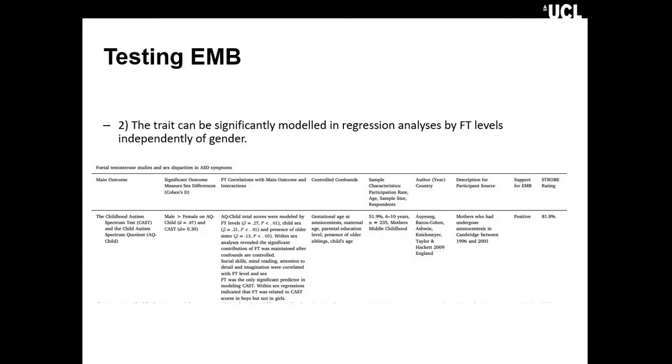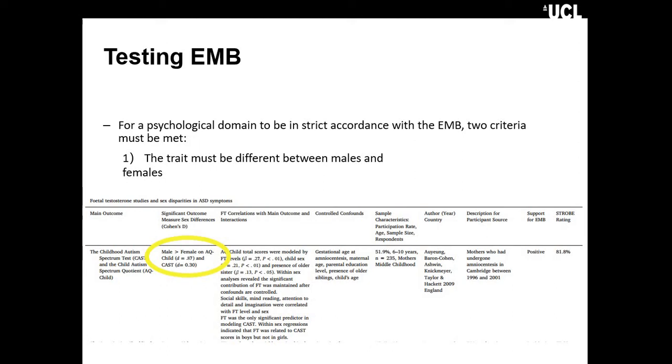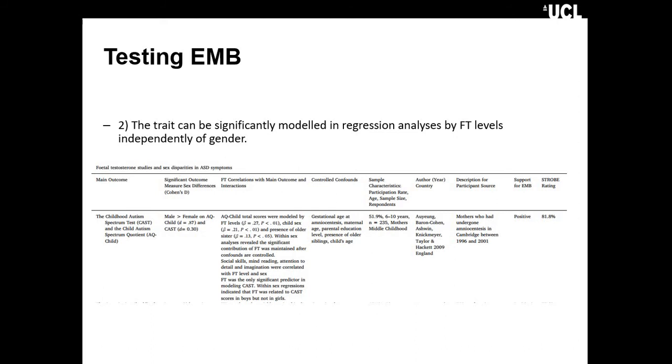In this paper, focus on the highlighted portion. This paper looked at the autism quotient and the child autism spectrum quotient. It was found that there was a large effect size, a large difference between males and females on the autism quotient, and a smaller difference in the CAST, which is a different autism measure.